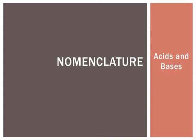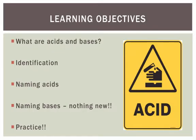In this video, we're going to continue our discussion on nomenclature, and we're going to talk today about how to name acids and bases. Acids and bases are types of ionic compounds with specific characteristics, and they are distinct enough from ionic compounds that they actually get their own set of naming rules. Let's talk about some of the learning objectives for this particular video.